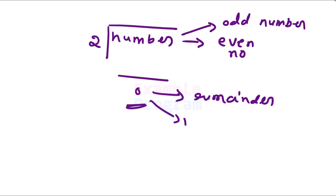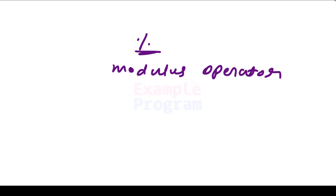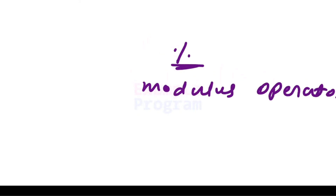Now we know about even and odd numbers, but how can we get the remainder when we divide a number by 2? For that purpose, in C++ we use an operator called the modulus operator, which is denoted by the percentage symbol. This operator will return the remainder when we divide a number by some other number.